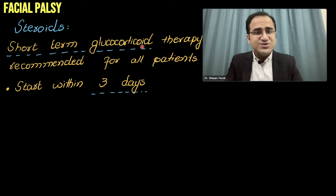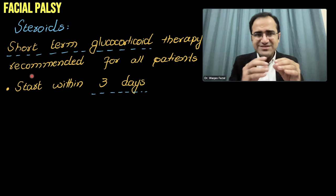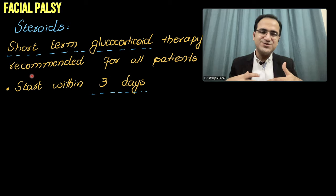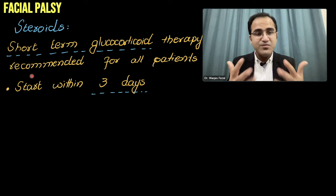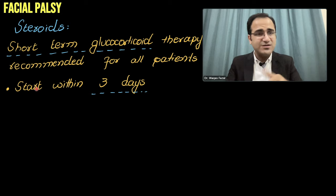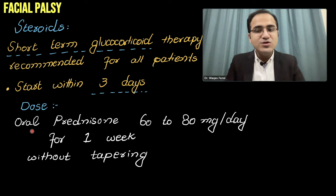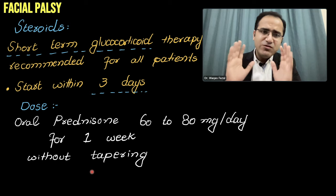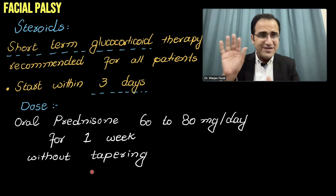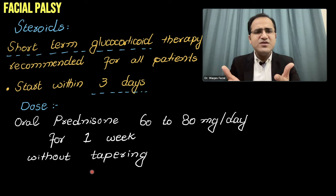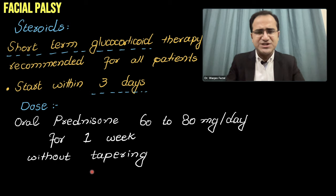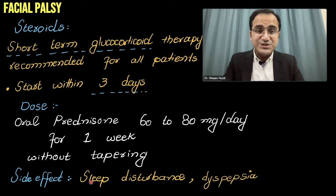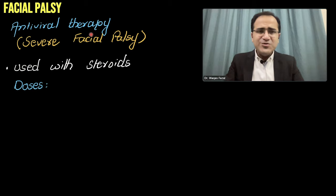Short-term glucocorticoid therapy is recommended for all patients. Since facial palsy is associated with inflammation and damage of the facial nerve, steroids reduce the inflammation and produce remarkable improvement, and should be started as early as possible — within 3 days. The dose is oral prednisone 60 to 80 mg per day for 1 week without tapering. If tapering is preferred: 60 mg for 5 days, then 10 mg for the next 5 days. There is no risk of Addison's or cortisol deficiency because the course is very short. Side effects include sleep disturbance and dyspepsia.